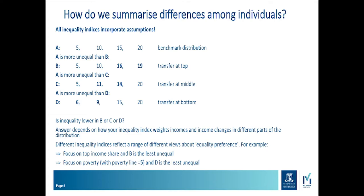These different inequality indices reflect a range of different views about these preferences. For example, if you focus only on top income shares, you would say distribution B is the least unequal because that's the one with the smallest share of income going to the richest individual. If you were only interested in poverty, you would say D is the least unequal if your poverty line is around $5, because that's the only distribution where there is no poverty.